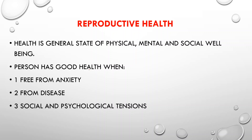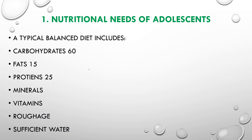Let's focus on nutritional needs for adolescents. As individuals, we should take a balanced diet to stay healthy. A typical balanced diet includes carbohydrates, fats, proteins, minerals, vitamins, roughage, and sufficient water. Carbohydrates should make up 60% of the diet, fats 15%, proteins 25%, along with minerals and roughage.